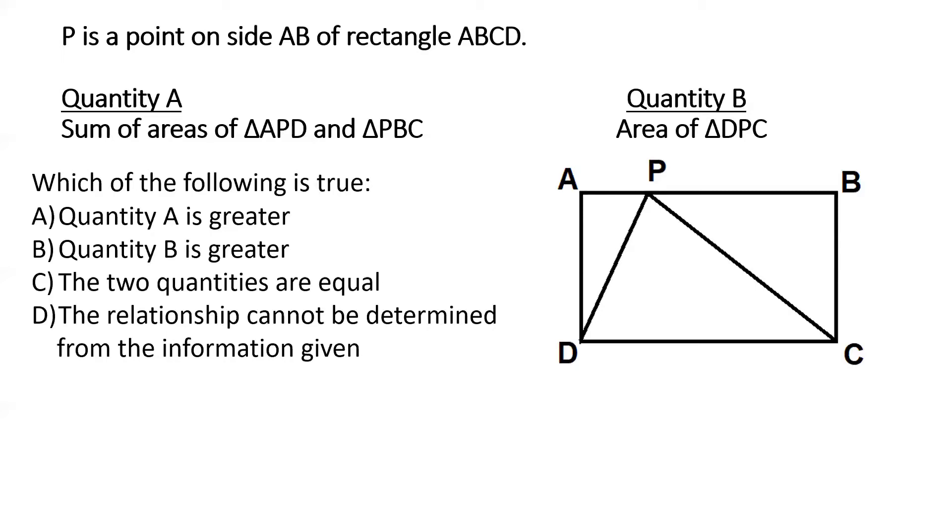Now, it is obvious from this picture that the area of triangle APD, the triangle DPC, and triangle PBC together, if you add those areas up, will be equal to the area of the whole rectangle. If we take the height of the rectangle as H and the width or breadth as B, then the area of the rectangle is BH. So we can write an equation like this. The sum of the areas of triangles APD, DPC, and PBC add up to BH.